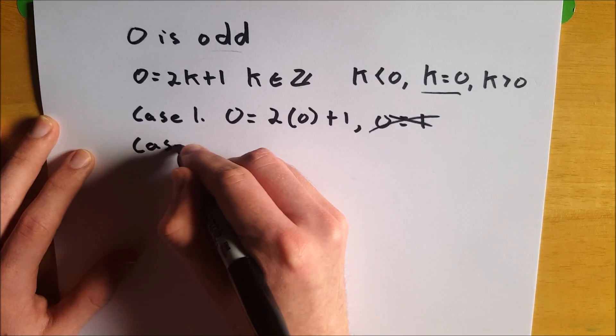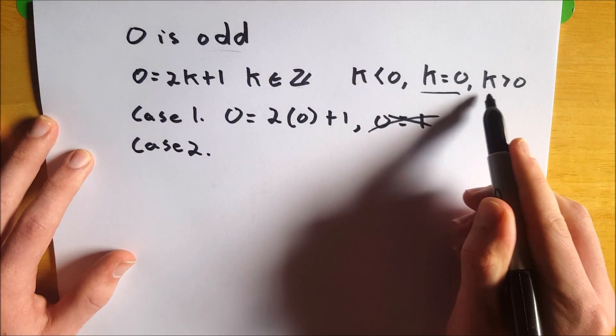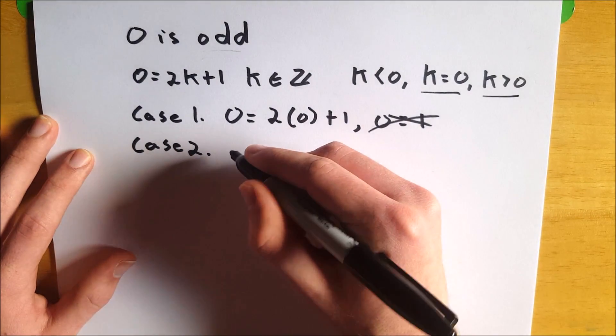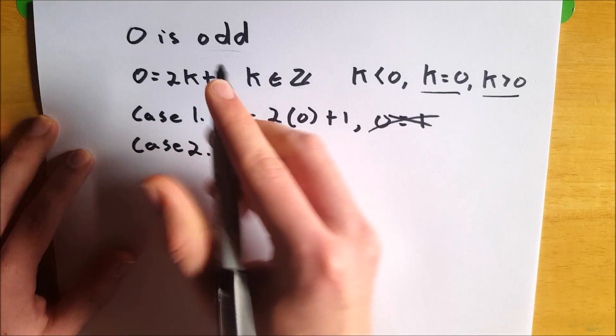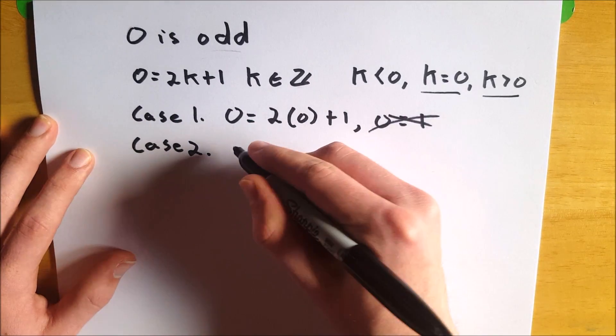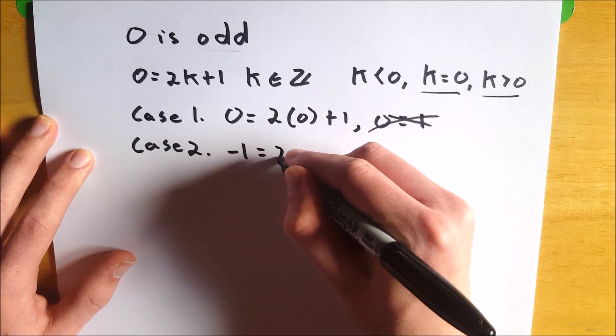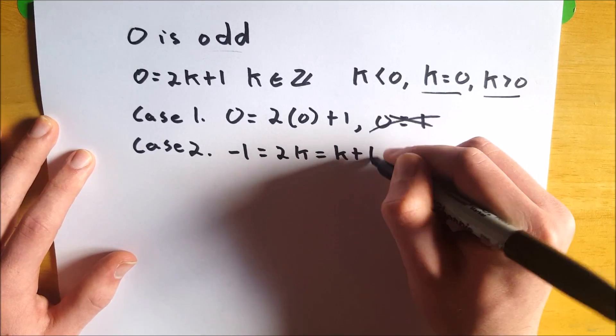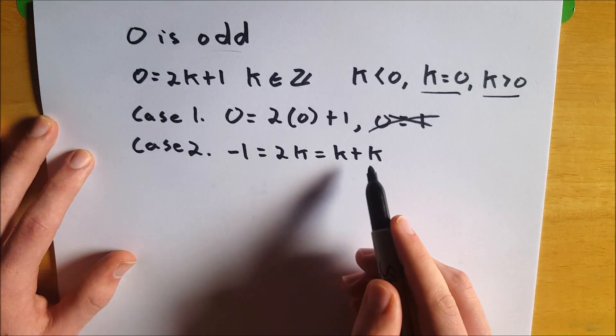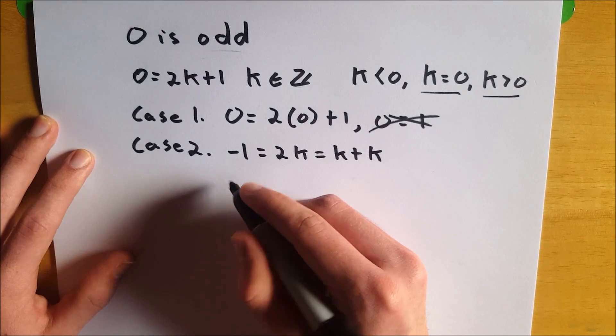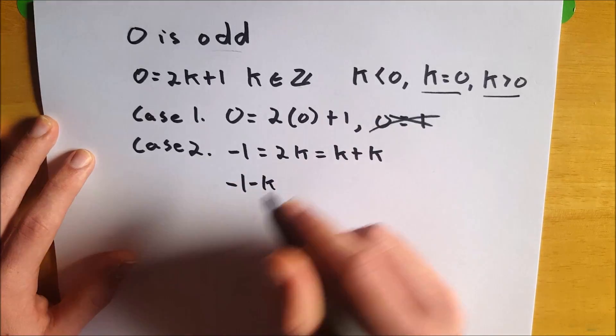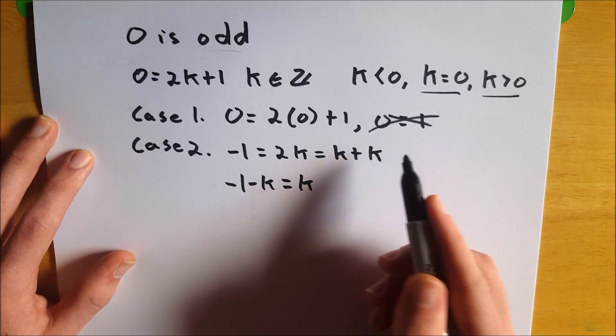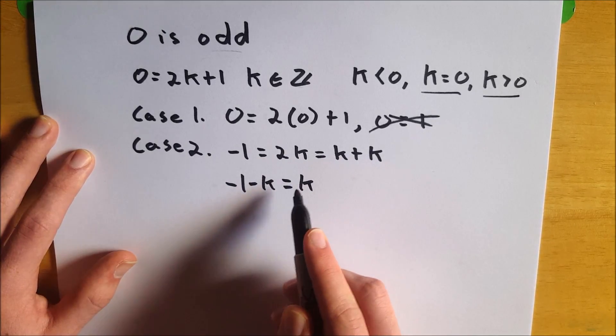Now let's check out case two, the next easiest, which would be when k is positive, greater than zero. So that means that zero, we're just going to take this one and move it over. So we're going to subtract one from both sides. So negative one equals two k. Now two k is the same thing as k plus k. So we're going to subtract a k from both sides. And that's going to give us negative one minus k equals k.